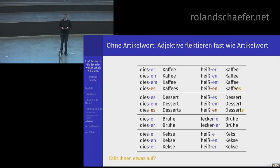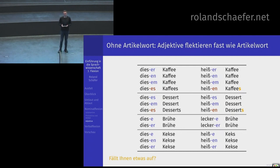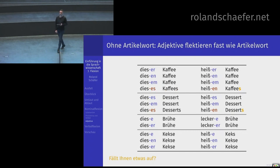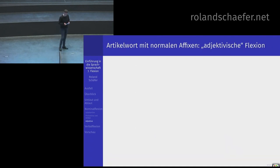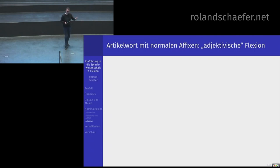Die Formen, in denen das nicht passiert, sind die, wo das Substantiv selber – nämlich Maskuliner und Neutra im Singular Genitiv – ein S hat. Das meinte ich mit: es hängt alles zusammen. Die einzige Kasusmarkierung beim Substantiv im Singular, nämlich der Genitiv, führt dazu, dass das Adjektiv nicht die S-haltige Endung des Artikels übernimmt, wenn kein Artikel davor steht. Das ist System.